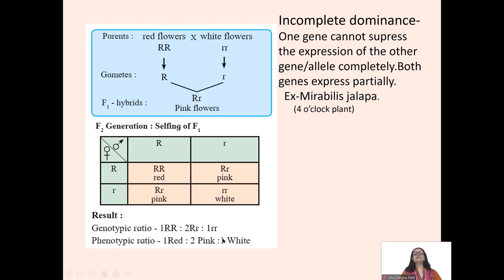Incomplete dominance occurs when one gene cannot completely suppress the expression of the other gene — both genes express partially. For example, a red flower (RR) crossed with a white flower (rr) produces pink flowers (Rr) in the F1 generation, because both genes express partially.